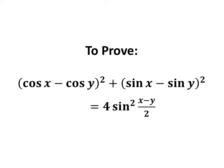In this video we will learn to prove the equation: square of cosine of x minus cosine of y, plus square of sine of x minus sine of y, is equal to 4 times square of sine of x minus y upon 2.